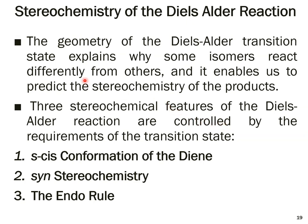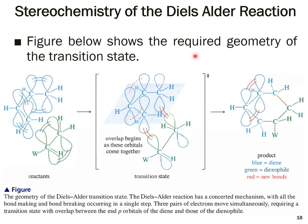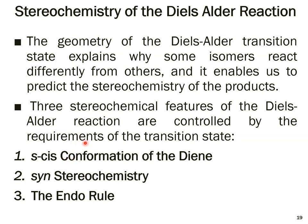The geometry of the Diels-Alder transition state explains why some isomers react differently from others and enables us to predict the stereochemistry of the product. There are three stereochemical features of the Diels-Alder reaction that are controlled by the requirements of the transition state: first, the S-cis conformation of the diene; second, syn stereochemistry; and third, the endo rule.